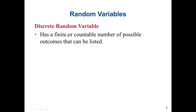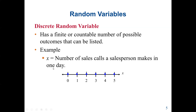A discrete random variable has a finite or countable number of possible outcomes that can be listed. Most of the time, discrete random variable values are whole numbers — we cannot say 20.4 patients or 1.2 trains. So discrete is always based on counting. For example, x equals the number of sales calls a salesperson makes in one day, which could be 0, 1, 2, 3, 4, or 5.